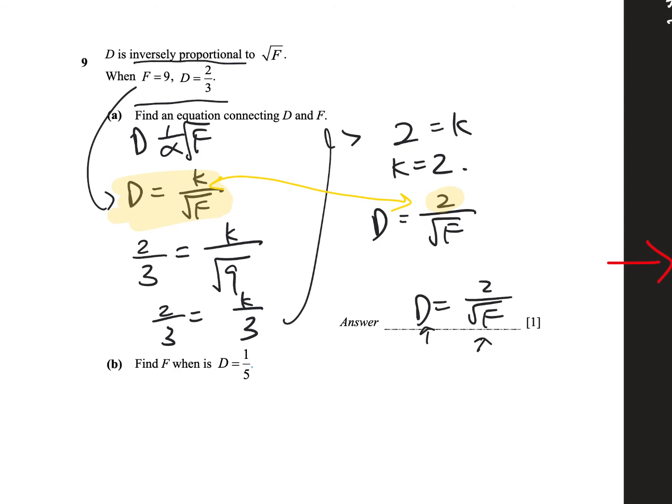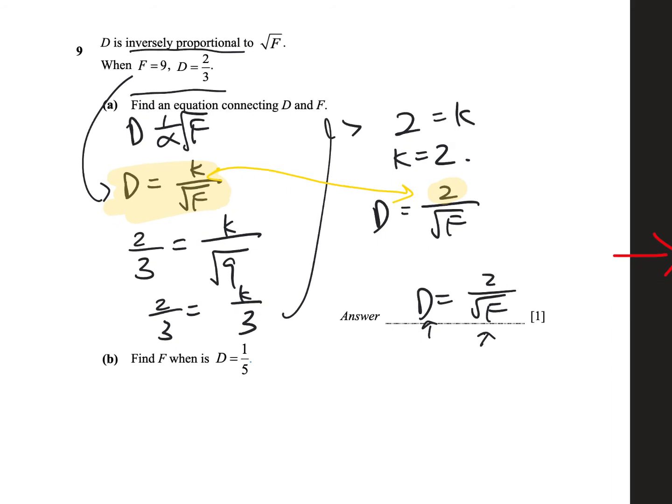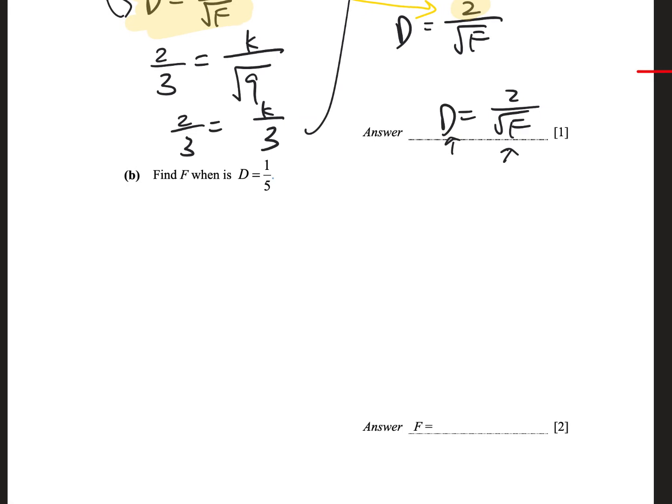Part B, find F when D is 1 over 5, so simply substitute it in, this is D, now we know that D equals to 2 over the square root of F, you want to find F, so when D is 1 over 5, so let's just substitute in, D is 1 over 5, square root of F.